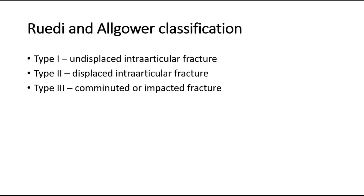Classification: The Ruedi and Algawer classification is a simple classification system used to describe the severity of pylon fractures. Type 1 is undisplaced intraarticular fracture. Type 2 is displaced intraarticular fracture. And type 3 is comminuted or impacted fracture.